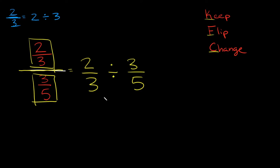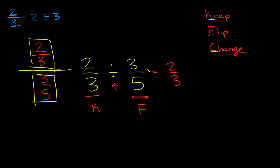What do I mean by that? We're gonna keep the first fraction, flip the second one, and change our sign. So we're gonna keep 2/3 as 2/3. We're gonna flip 3 over 5, so it turns into 5 over 3. And then we're gonna change the sign — so instead of dividing, we're actually gonna multiply.